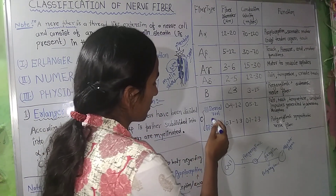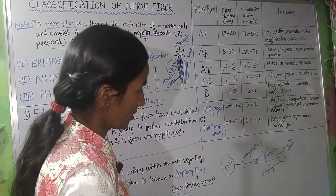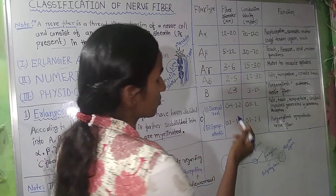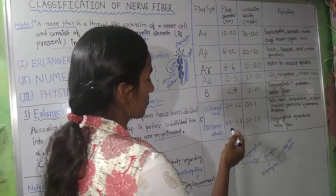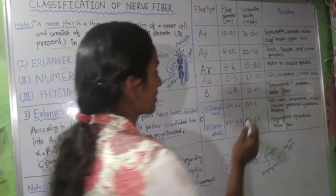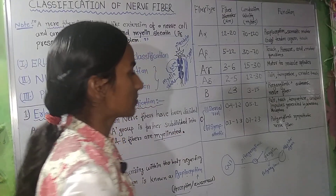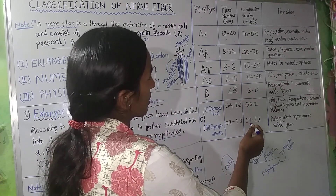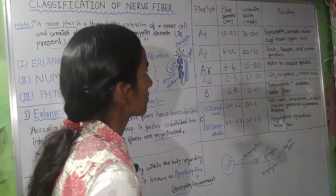C fibers are divided into two groups: dorsal root and sympathetic. The dorsal root C fiber diameter is 0.4–1.2 micrometers and the conduction velocity is 0.5–2 meters per second. The sympathetic C fiber diameter is 0.7–2.3 micrometers.